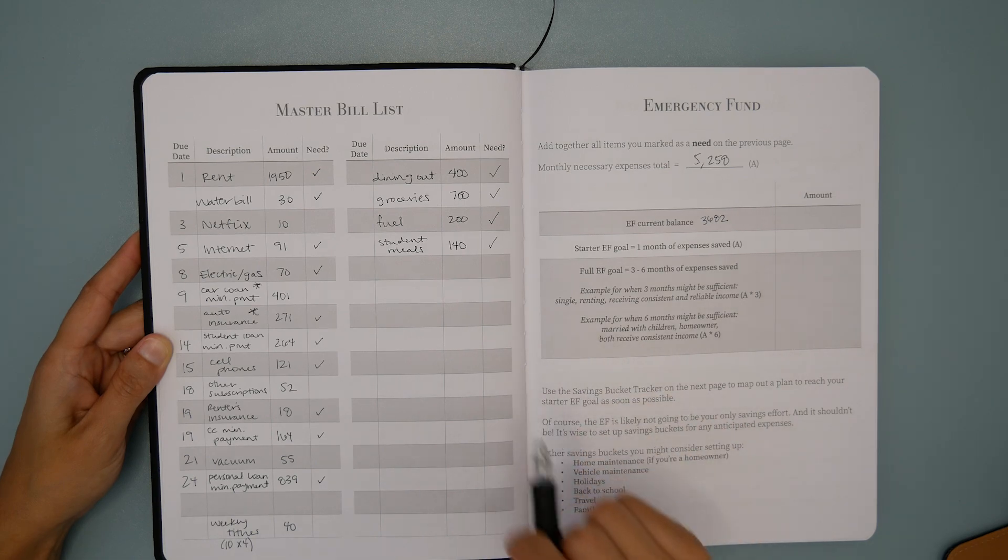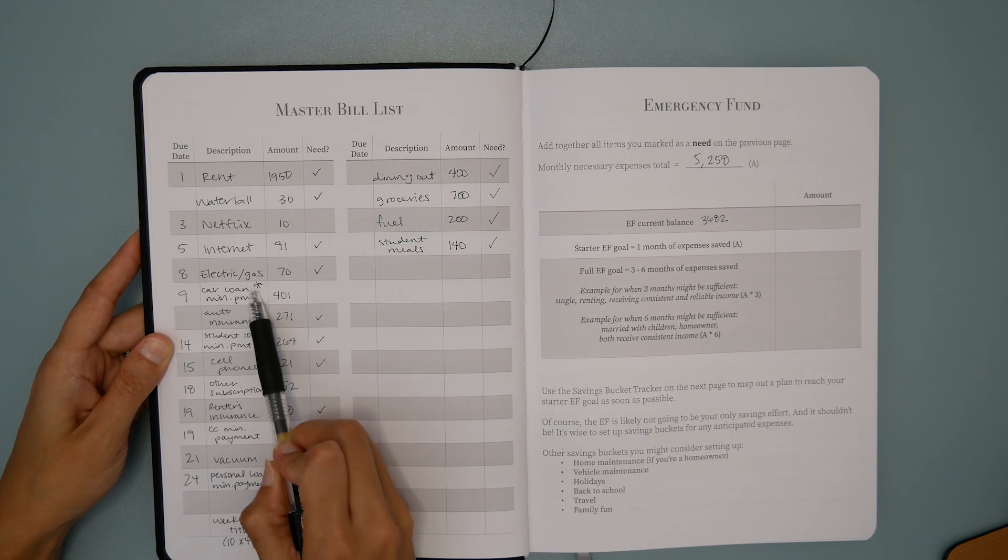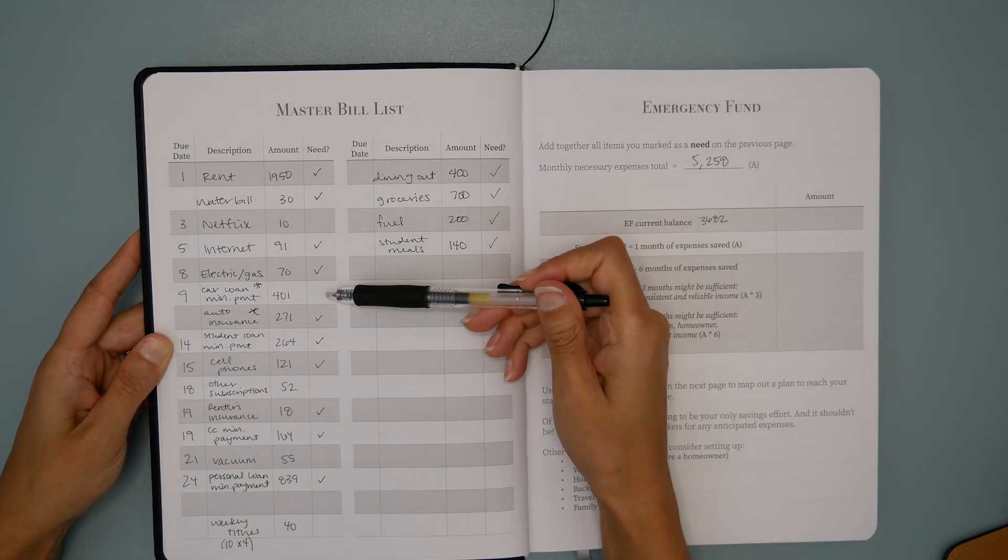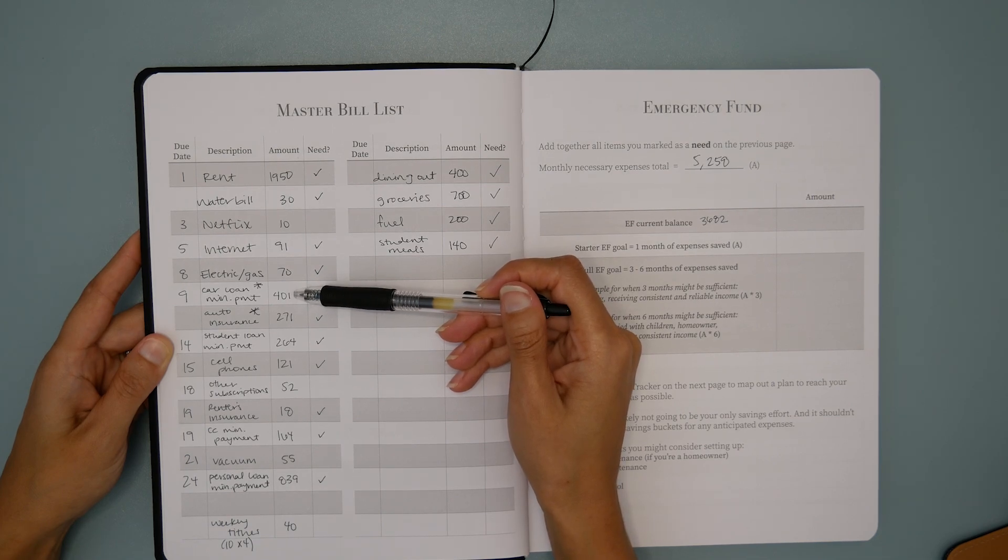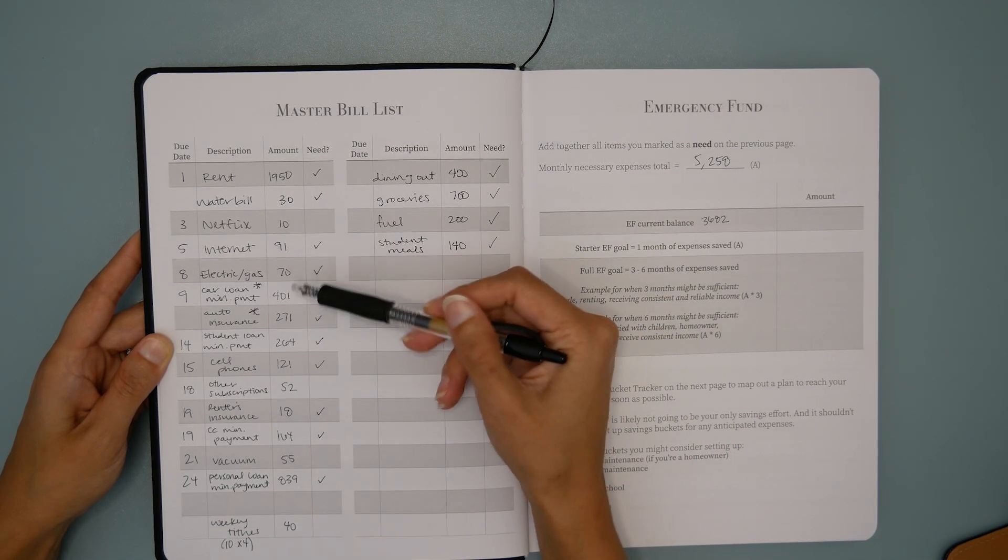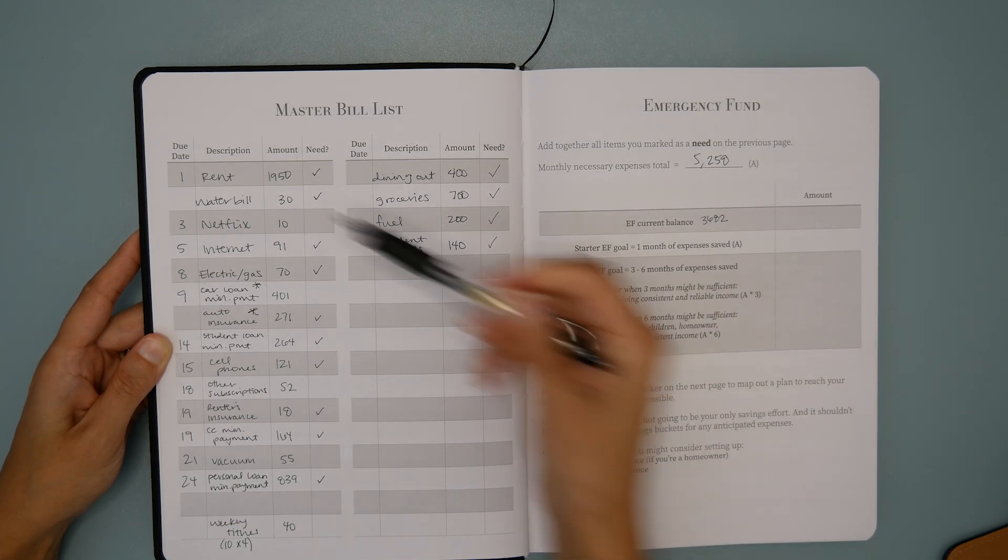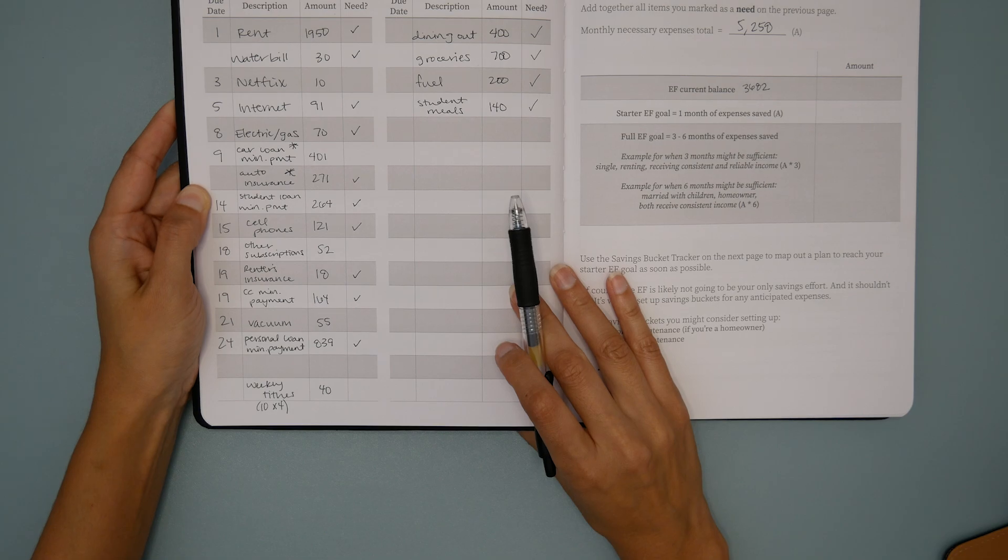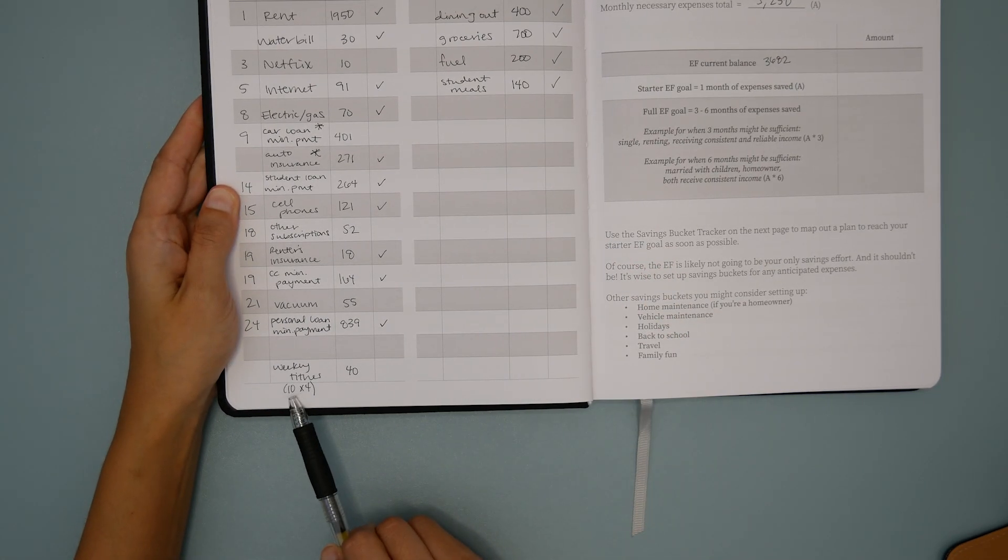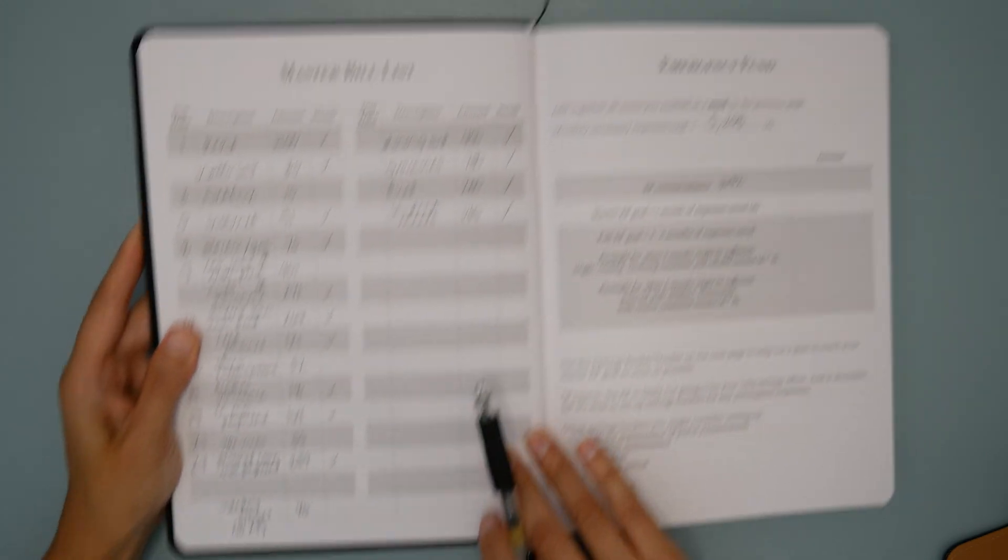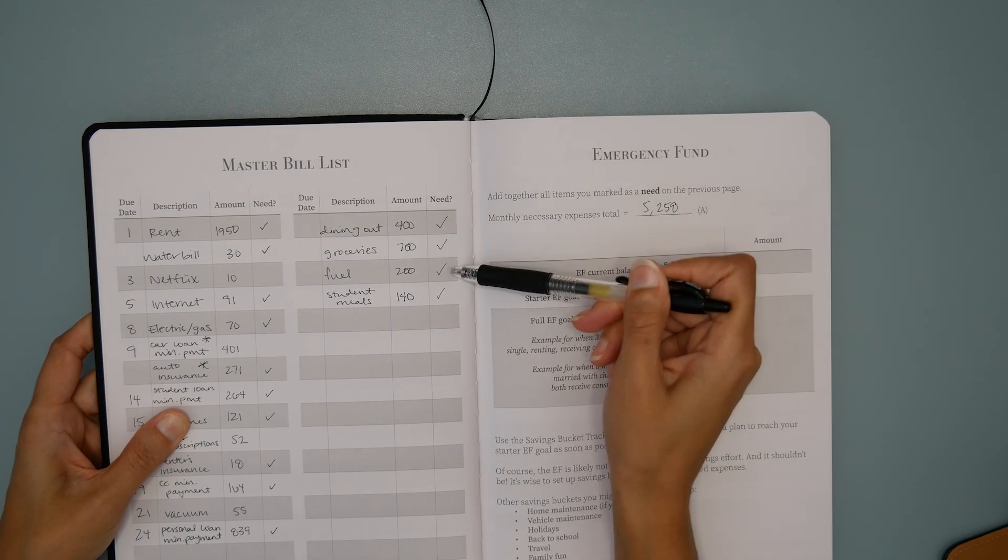We then shift over to her master bill list. This is where we're going to list those bills that she covers every single month. We're also going to make sure that we mark which of these line items is a need, meaning it's a core expense, non-negotiable, has to be paid every single month. So those are going to be housing, food, transportation, and minimum debt payments.